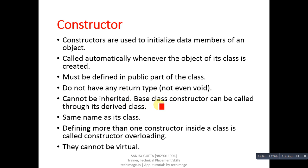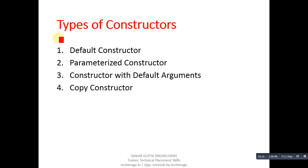It cannot be inherited, meaning a base class constructor can be called through its derived class — this concept you will be able to understand in the tutorial related to inheritance. It has the same name as its class — this is important, whenever you are defining any constructor it should have the name of the class. Defining more than one constructor inside a class is called constructor overloading. They cannot be virtual — this concept is also related to inheritance which you will study in later tutorials.